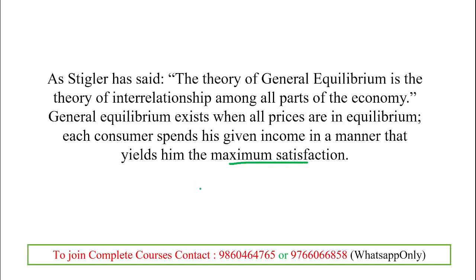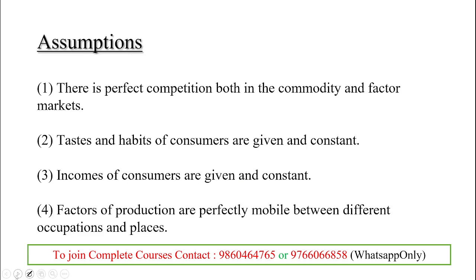In general equilibrium, consumer satisfaction is maximum and producer satisfaction is also maximum. One of the key assumptions is that the market should be under perfect competition — both the commodity market and the factor market will function as a perfectly competitive market.